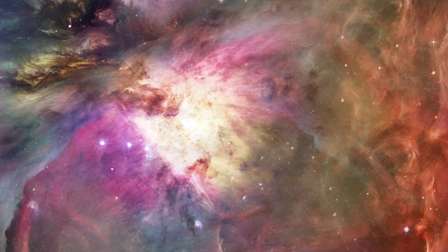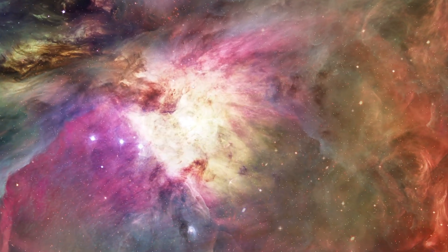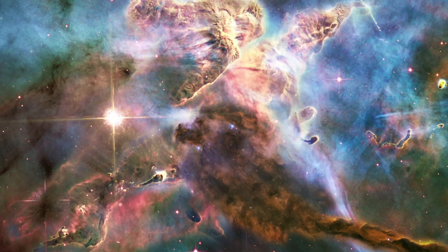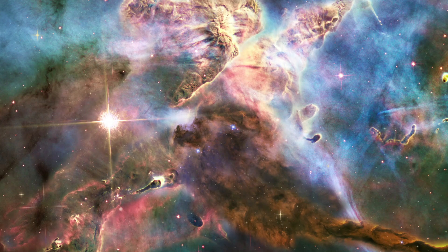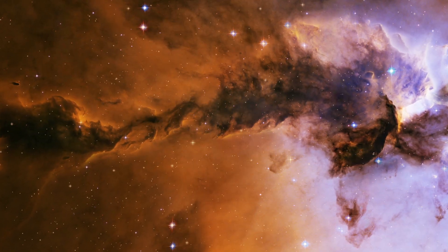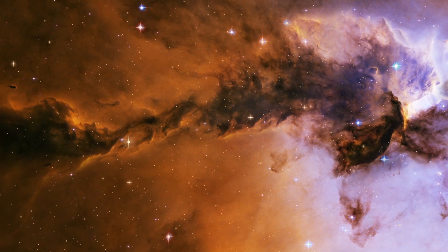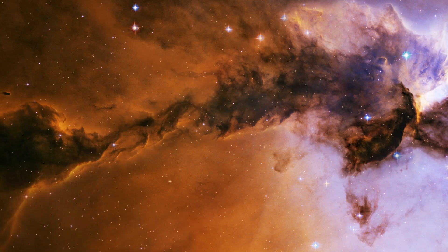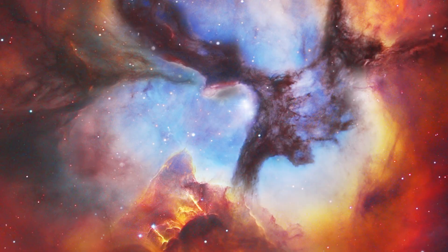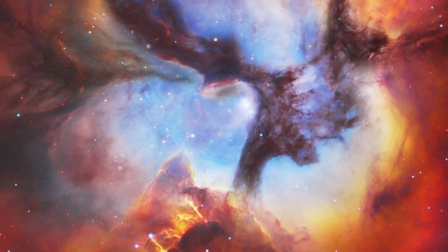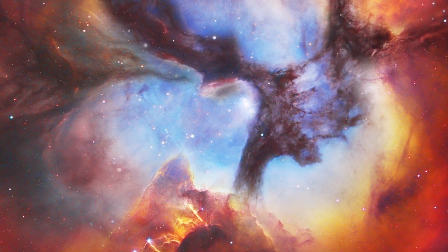HIP 65426 b is a huge gas giant that is light years away from Earth. In September 2021, Webb took the first direct photograph of an exoplanet. This enormous accomplishment gave scientists a tantalizing look at the wide variety of worlds that make up our galaxy and was a major turning point in the field of exoplanetary study.